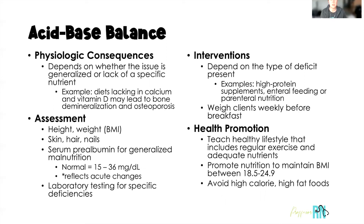For nutritional assessment, measuring height and weight and calculating BMI is really important. We also look at skin, hair, and nails — malnutrition causes definite alterations in all three. When it comes to laboratory testing, serum prealbumin is a really good indicator of overall nutrition status. A normal serum prealbumin should be 15 to 36 milligrams per deciliter. We prefer prealbumin over albumin because prealbumin reflects acute changes more quickly, allowing us to see changes sooner.